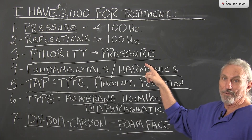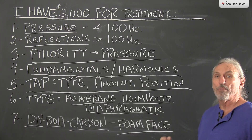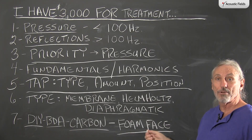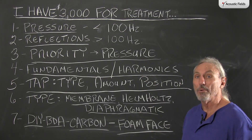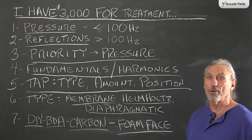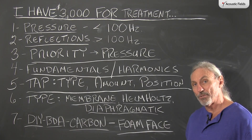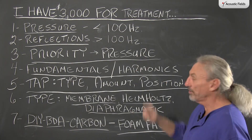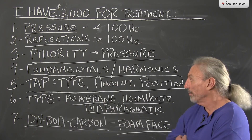What does our priority have to be? It really doesn't matter if you have $1,000, $2,000, $3,000, $30,000, or $300,000 — you have to get the low end under control. You have no choice, and that choice is even more restricted in small rooms. So pressure has to be our first choice below 100 cycles.